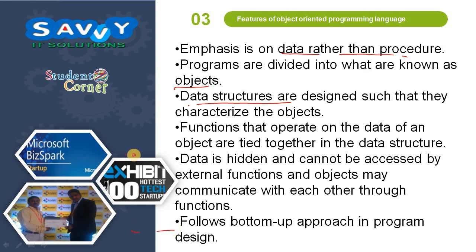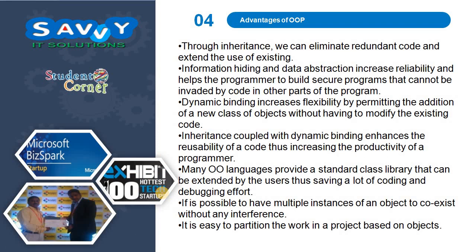Objects may communicate with each other through functions. Object Oriented Programming follows a bottom-up approach, because the classes are defined in the top layer and the main class is defined last. In the main class, we call the objects, and the class hierarchy is automatically accessed.